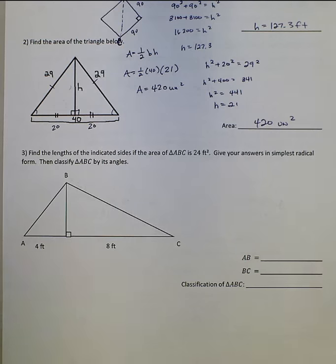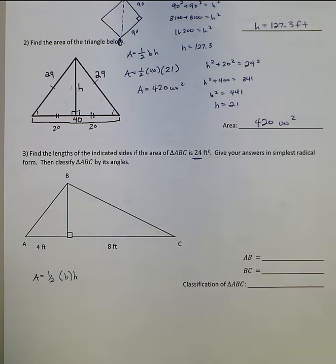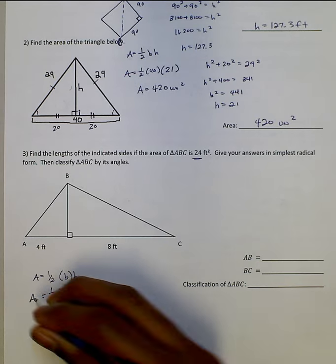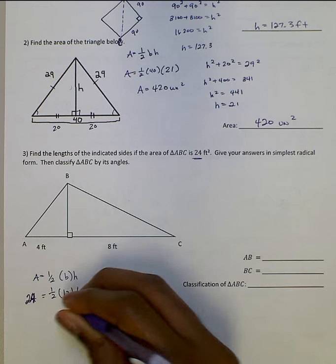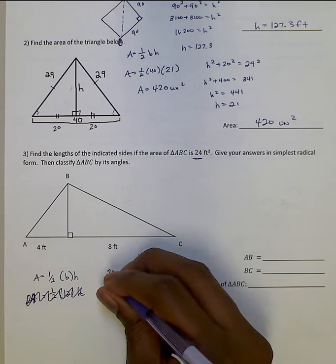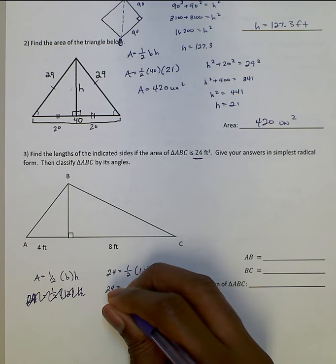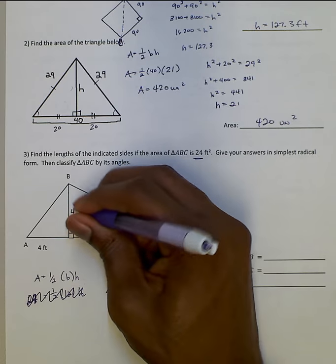Final problem here. Find the lengths of the indicated sides if the area of triangle ABC is 24 feet squared. Give your answer in the simplest radical form, then classify triangle ABC by its angles. They gave us the area. We know that area equals one-half base times height. We know the base. The base is 4 plus 8, which is 12. So if the area is 24, we know this equation. 24 equals one-half base, which is 12, times height. We can find the height. 24 equals 6H. I'll try to get H by itself by dividing by 6, and so H will equal 4. This is our height.